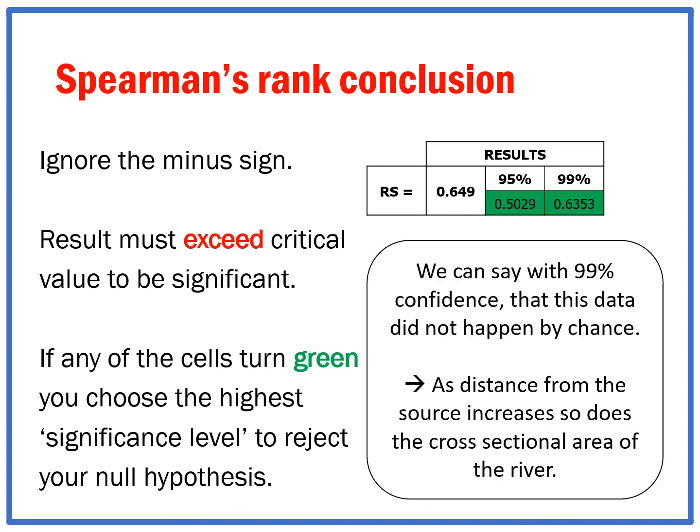In my report, I would include that little table, maybe the scatter graph, and I would say something along the lines of: due to the results of my statistical test, I can state with a 99% confidence level that this data did not happen by chance. So yes, as the distance from the source increases, so does the cross-sectional area of the river.